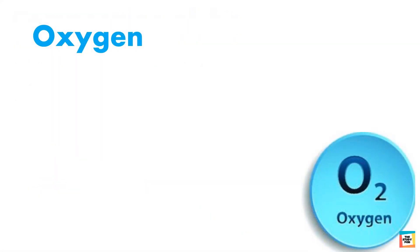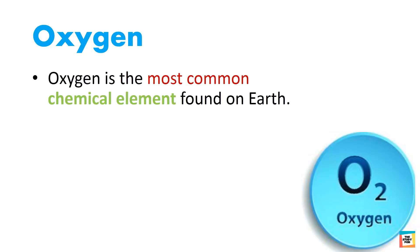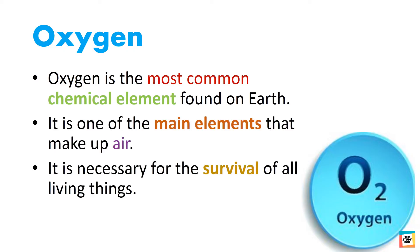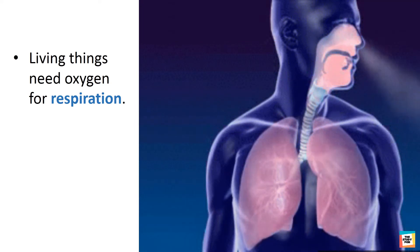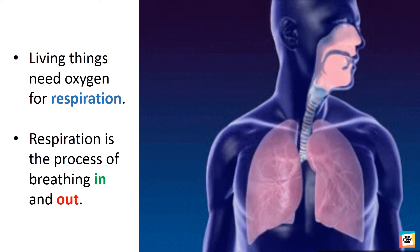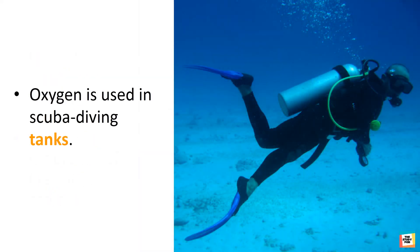The most important gas present in the air is oxygen. Oxygen is the most common chemical element found on earth. It is one of the main gases that make up air, and it is necessary for the survival of all living things. Living things need oxygen for respiration, which is the process of breathing in and out. Oxygen is also used in scuba diving tanks, which help divers to breathe underwater.